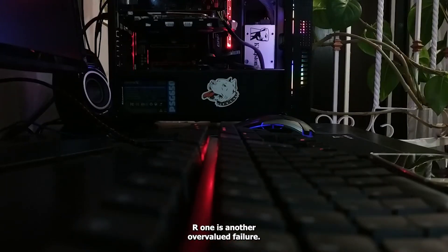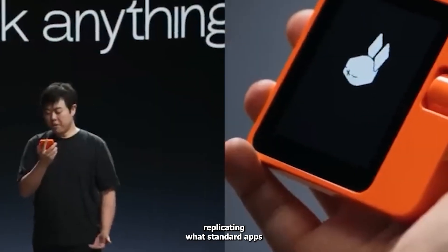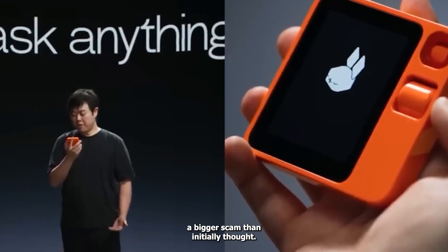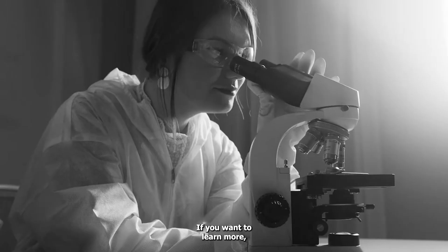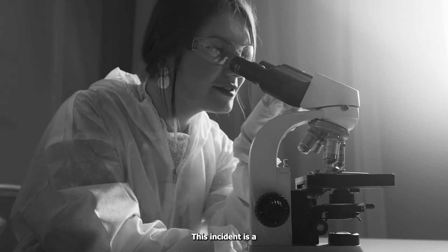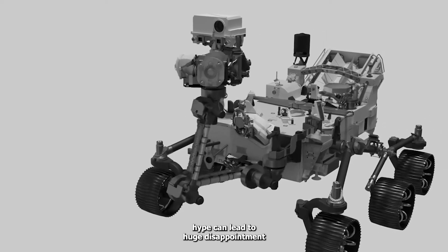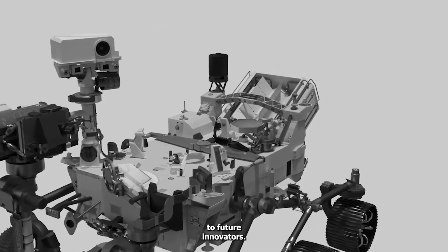The Rabbit R1 is another overvalued failure. Initially praised for its innovative features, it was soon criticized for merely replicating what standard apps could do. Things got even darker when it turned out to be a bigger scam than initially thought. If you want to learn more, check out CoffeeZilla's video on the topic. This incident is a classic example of how technology hype can lead to huge disappointment and serves as a warning to future innovators.